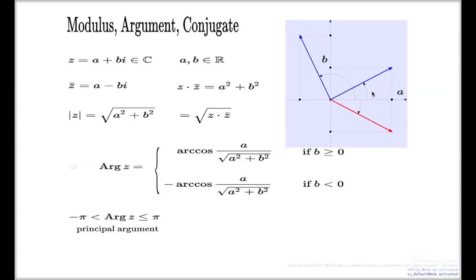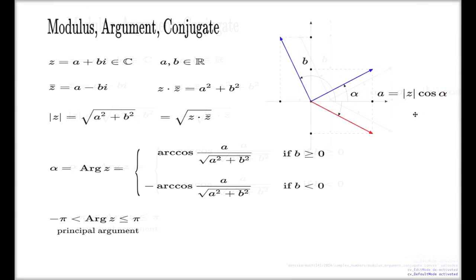Given that this is the angle—let me call the argument alpha. From elementary trigonometry, you can say that this one will be the modulus of your z number times cos alpha. This is just the elementary trigonometry observation when you have a triangle like this.